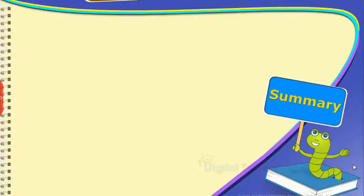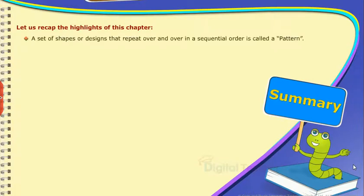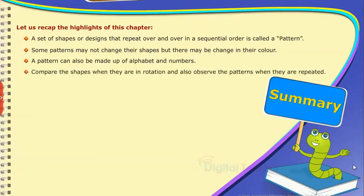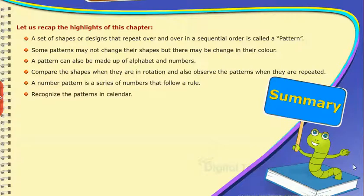Summary: Let us recap the highlights of this chapter. A set of shapes or designs that repeat over and over in a sequential order is called a pattern. Some patterns may not change their shapes but there may be change in their color. A pattern can also be made up of alphabet and numbers. Compare the shapes when they are in rotation and also observe the patterns when they are repeated. A number pattern is a series of numbers that follow a rule. Recognize the patterns in calendar.